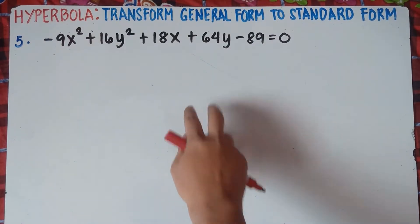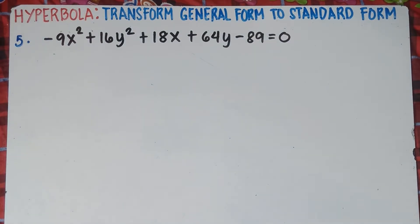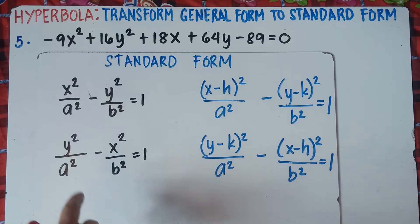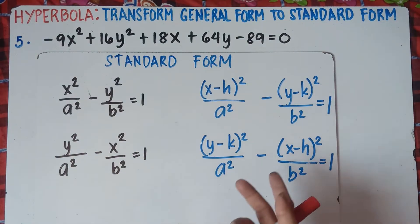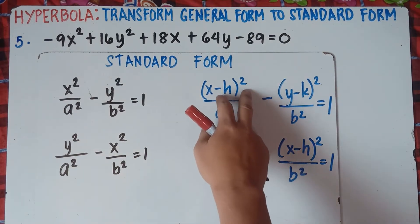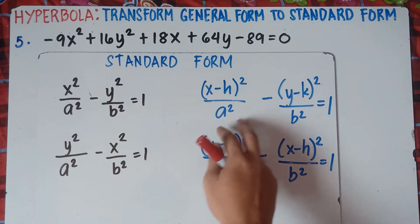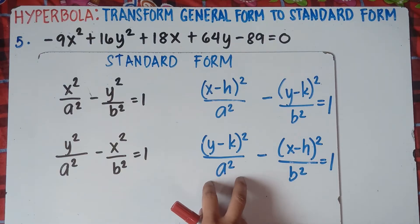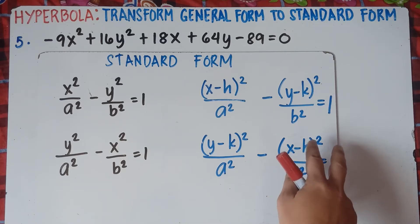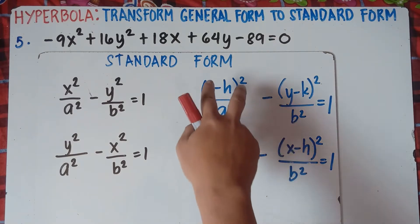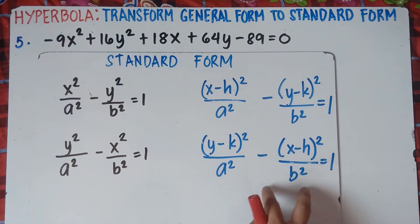We transform this general form into standard form. Remember the standard form of a hyperbola. So in this scenario for number 5, our h and k will not be at (0, 0). We have: quantity (x minus h) squared over a squared, minus quantity (y minus k) squared over b squared, equals 1. Or: quantity (y minus k) squared over a squared, minus quantity (x minus h) squared over b squared, equals 1.